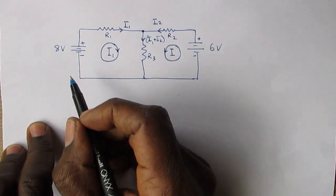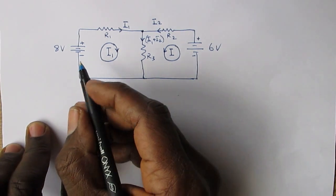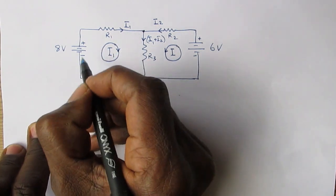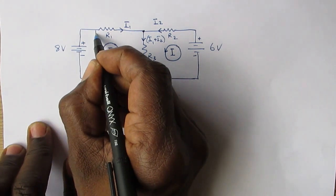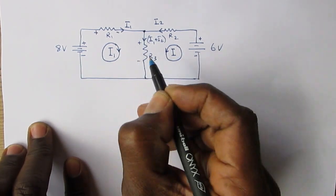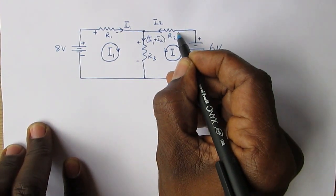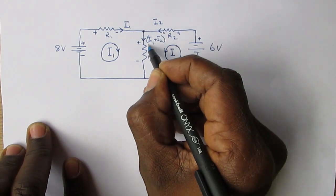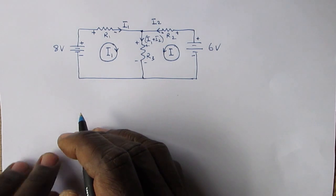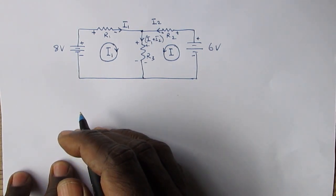Next, for getting our polarities correct, we put the polarities on the resistors. This point is positive, this point would be negative. This point would be positive, this point negative. Over here, this point would be positive, negative here, positive, negative.